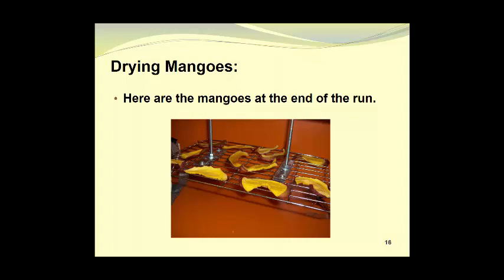Here are the same mangoes at the end of the run. Notice how they have shrunk in size, also they have curled up a bit and the color has changed considerably, although it is not objectionable. Some people like to remove the peel of things like apples and mangoes before drying them because when you dry them the peels can actually become quite tough and they may be unpleasant to consume.